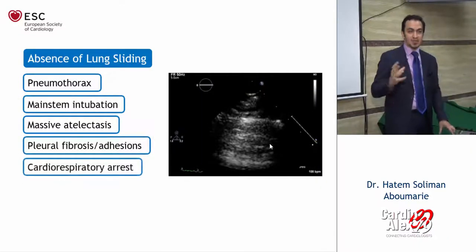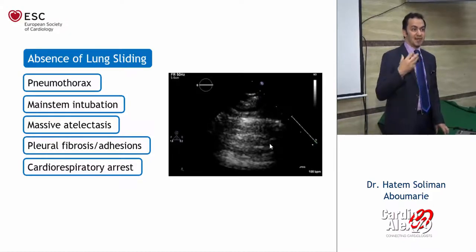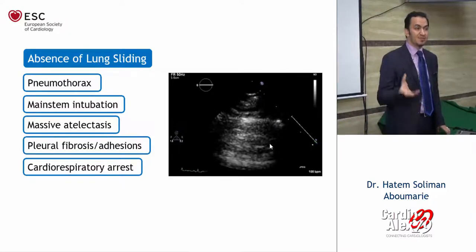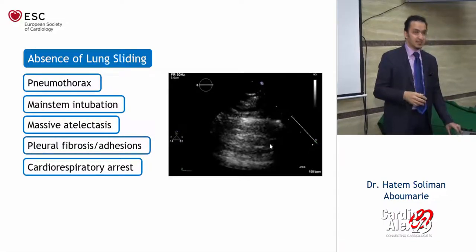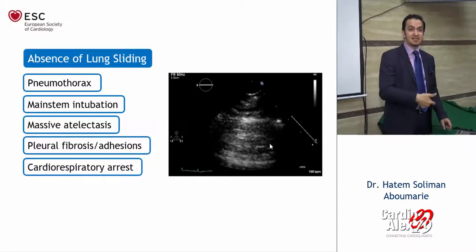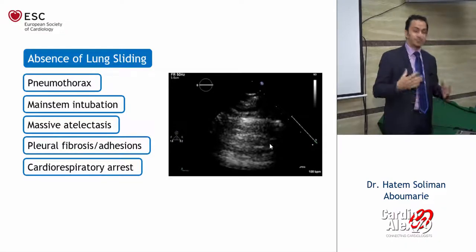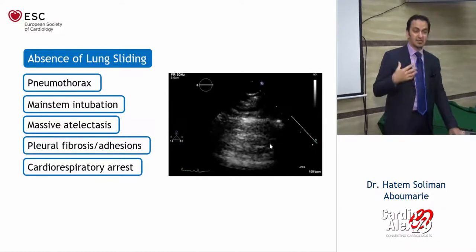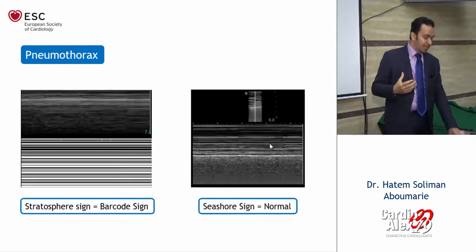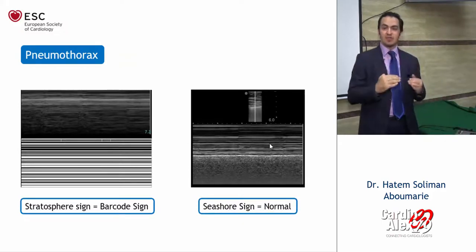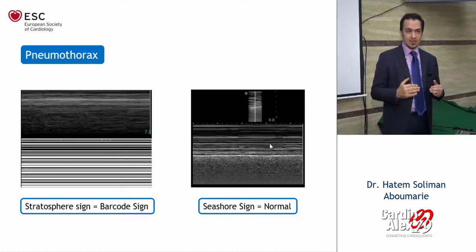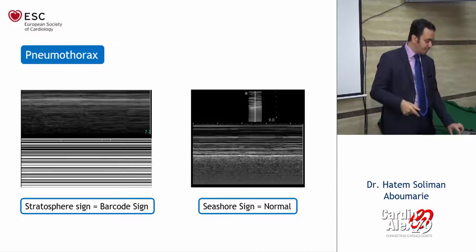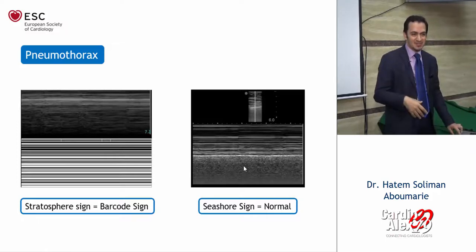Lung sliding will be absent in pneumothorax, pleural fibrosis, or adhesions, but also in right main stem intubation — the left lung won't be ventilated — and in massive atelectasis. Adequate tidal volume and ventilation are required to see lung sliding. If you lose visualization behind the pleural line and want to confirm pneumothorax by M-mode, you will see the characteristic barcode sign, as compared to the beautiful seashore sign.